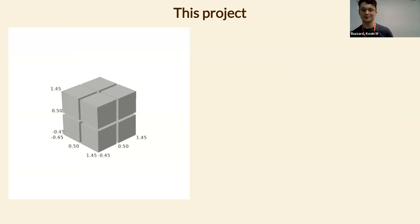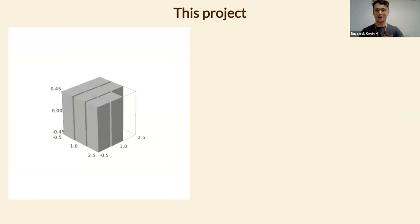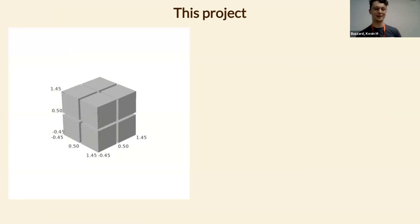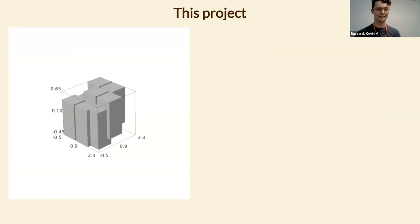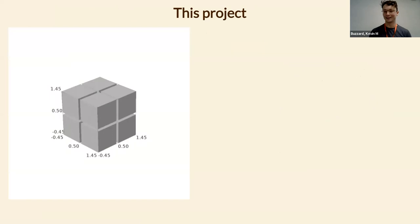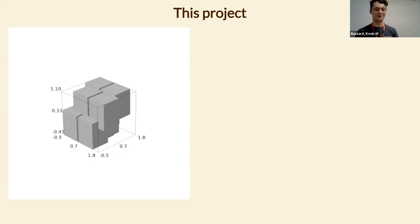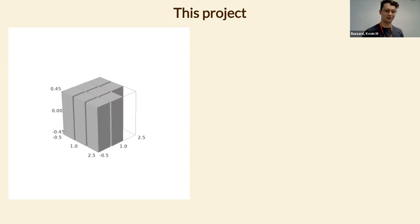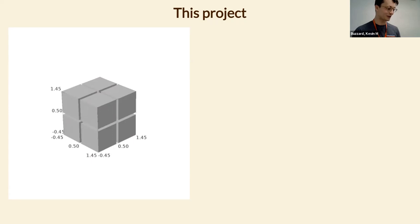I'll start with what Diophantine equations are. I'll assume nothing of the audience and give a little visual demo. This is a two by two by two block of cubes, and if you rearrange them you almost get a three by three by three square, except you're missing one. It's the sort of thing a child might do — rearranging cubes and wondering what's possible.